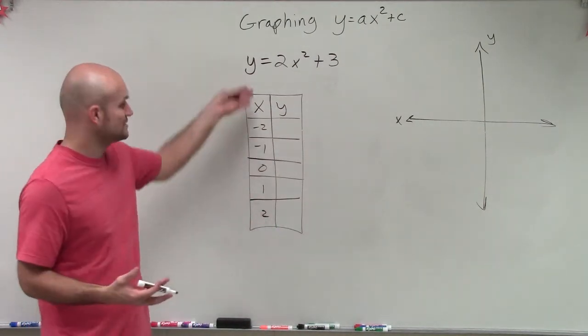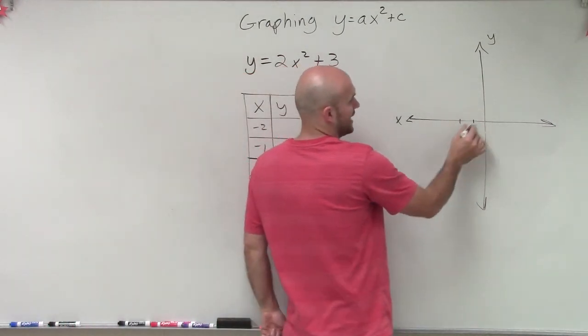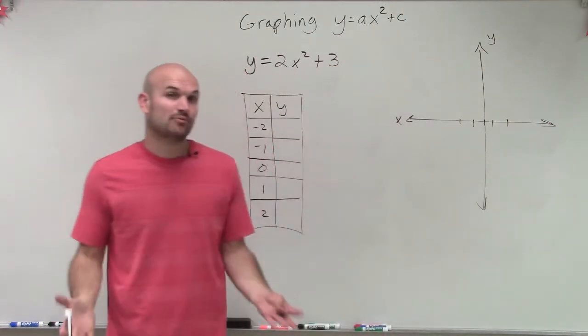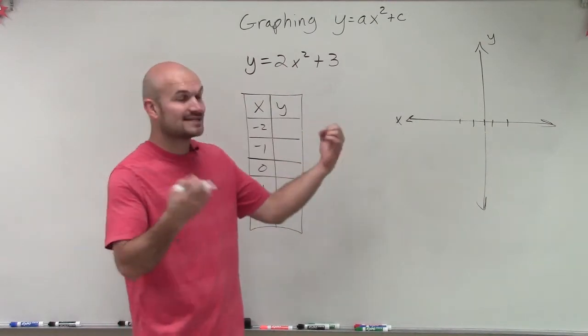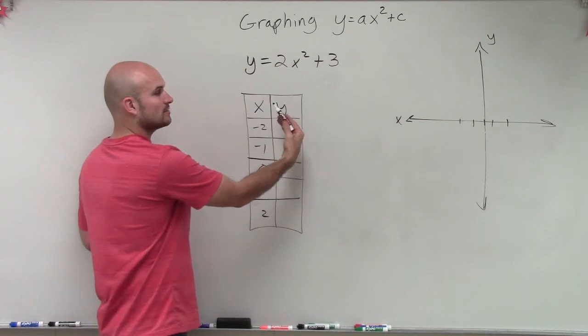So then, now what we need to do is evaluate. So I pick these x-coordinates, which is going to be at negative 2, negative 1, 0, 1, and 2. But now, remember, a parabola is a set of x-coordinate and y-coordinate. Every point has two coordinates to it, an x and a y-coordinate. So therefore, if I'm saying, well, here's the x-coordinate, then what is the y-coordinate?